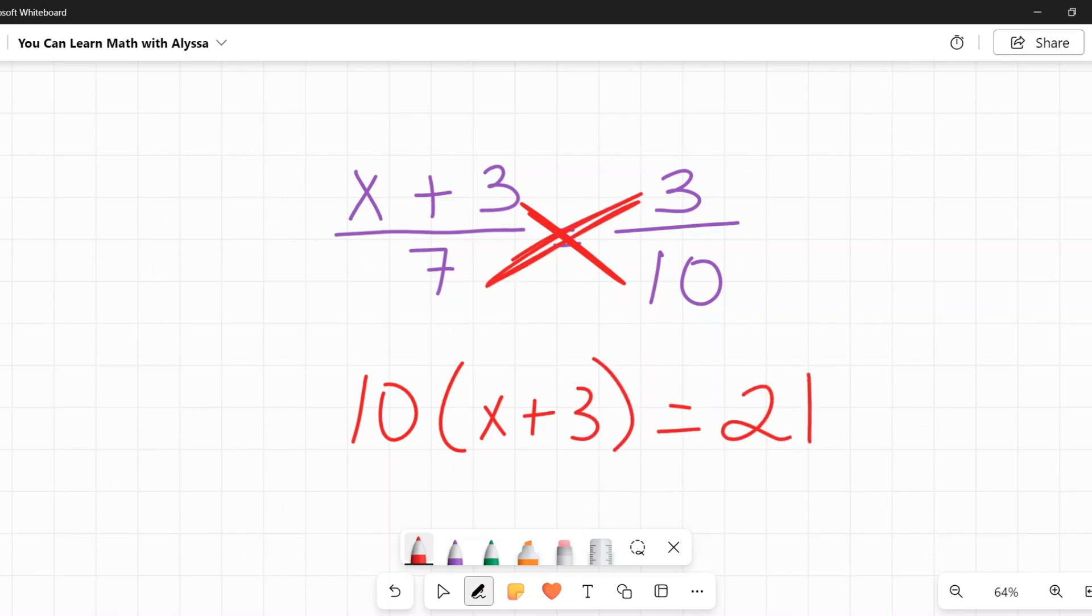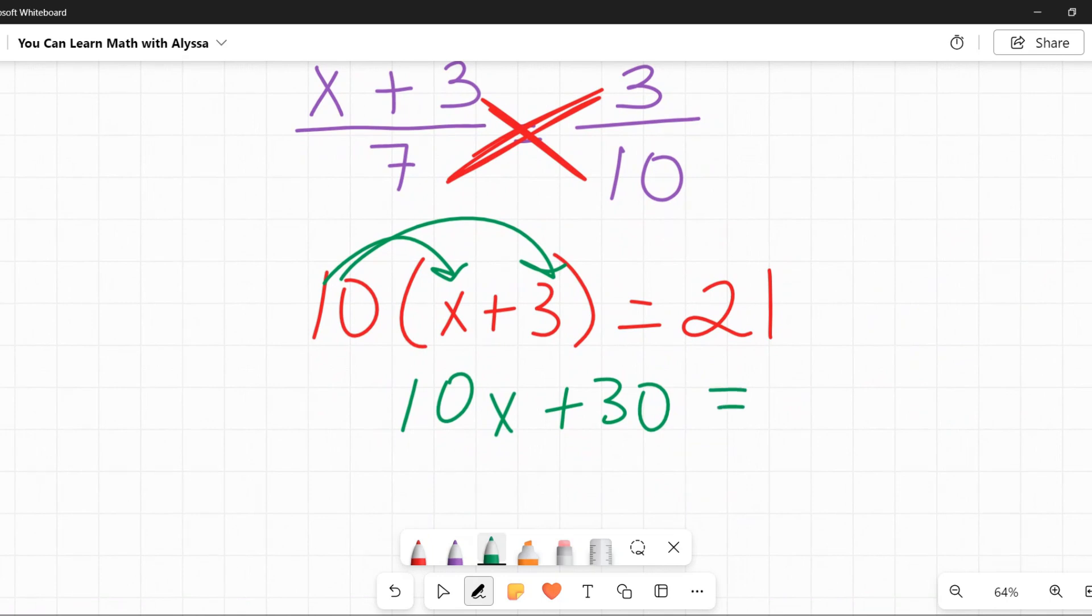I know that's going to be equal to my other direction, 7 times 3 or 21. Then you will need to distribute 10 times x being 10x, and 10 times 3 being 30, still equal to 21.